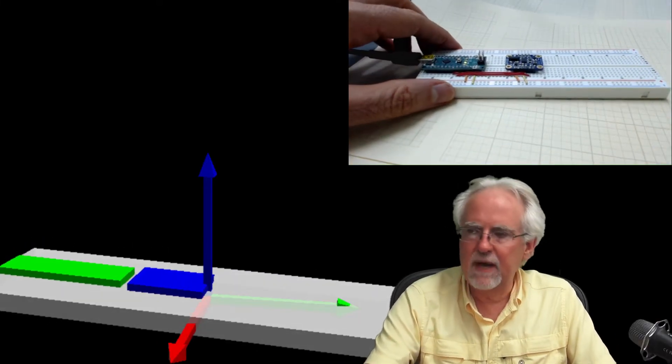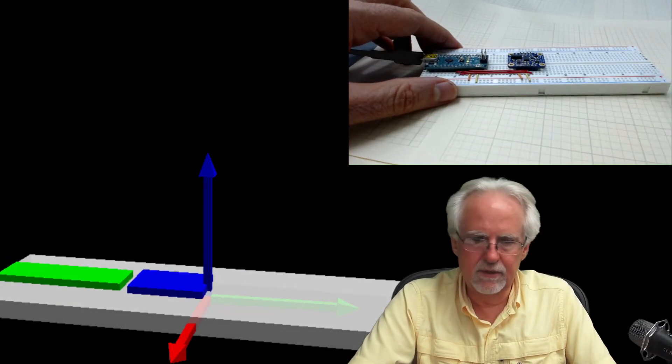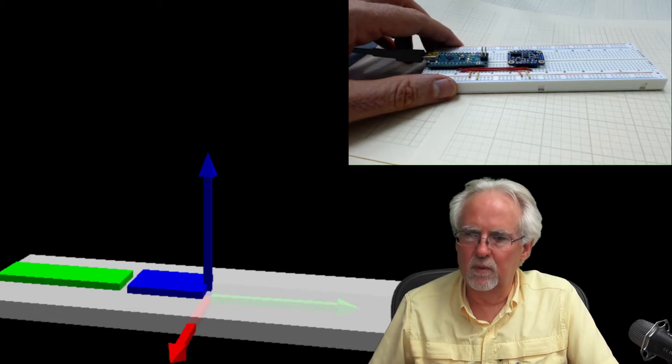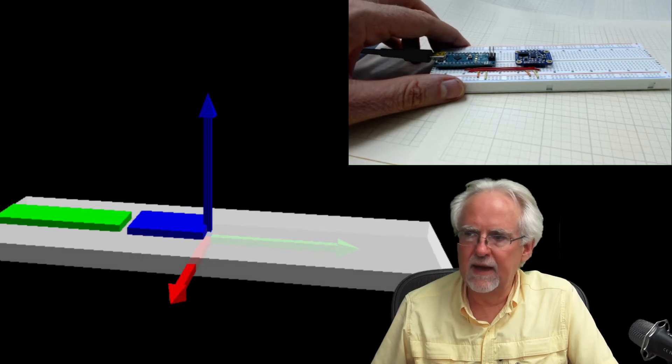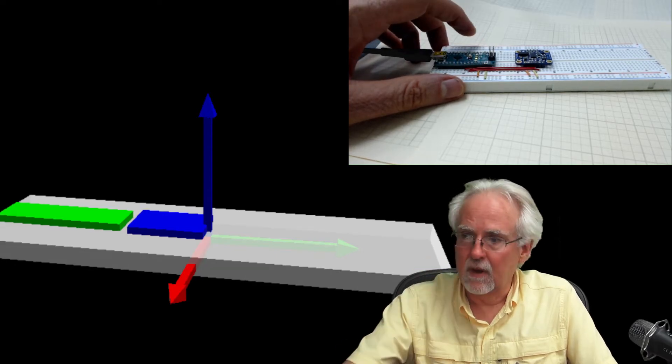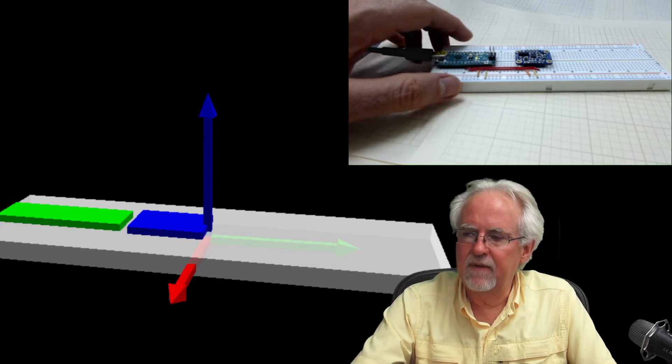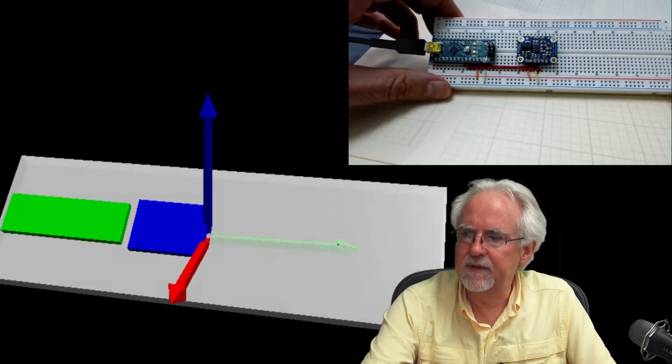OK. There it is. I believe we've got it now. OK. So you see, now my simulation, instead of something arbitrary, my simulation looks a lot more like what we are really dealing with. We've got our breadboard. And then we have our Arduino. And then we have our BNO 055.